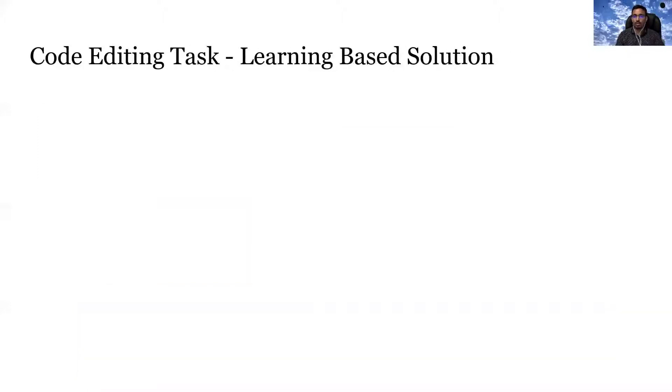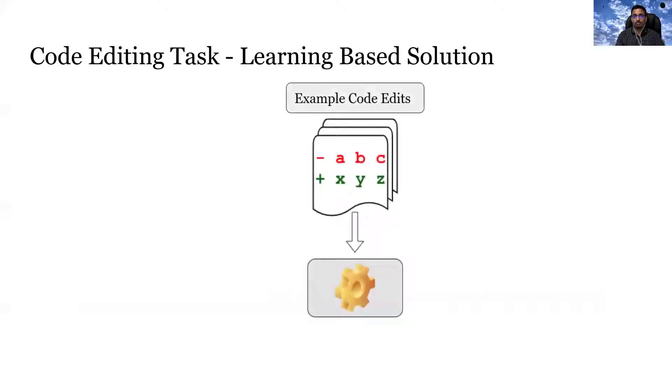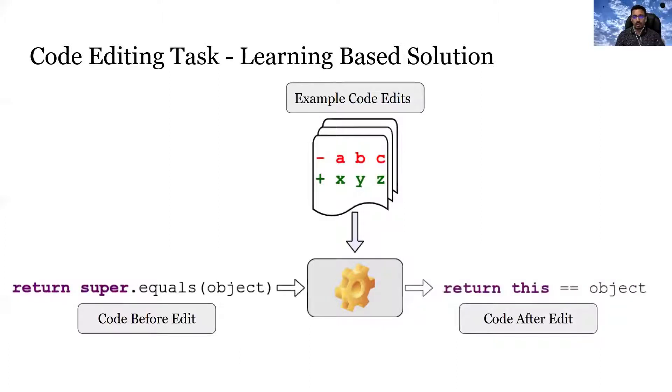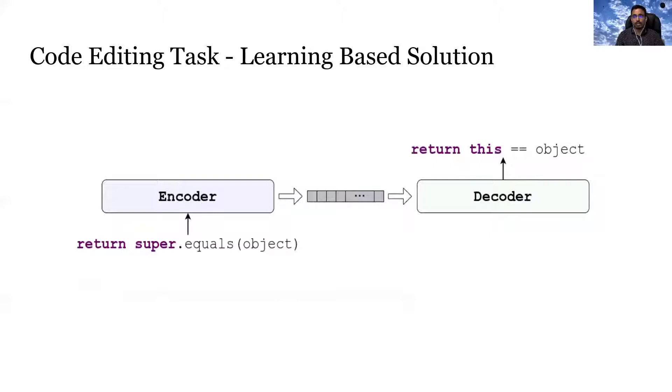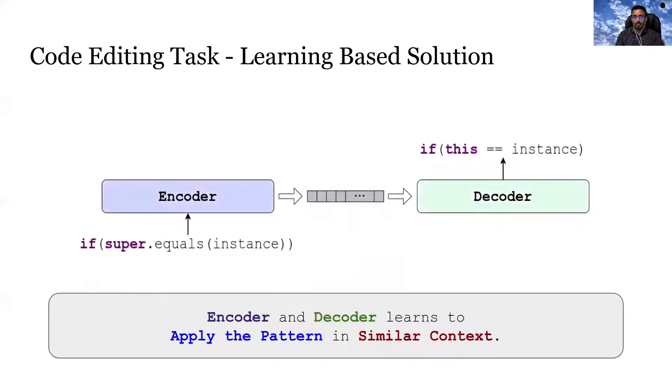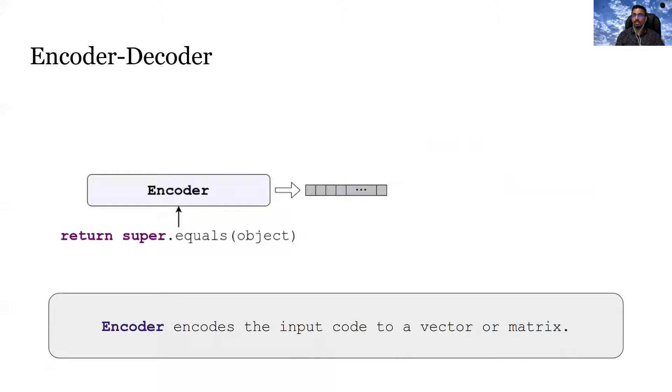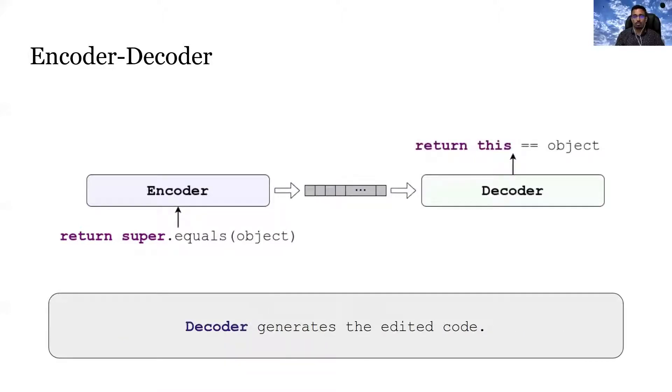Another way to solve this problem is to learn such edits. In this solution, we train a machine to learn code edit patterns from example edits. After training, the machine takes in the before-edit version of the code and translates it to the after-edited version. Thus, the machine applies the code change pattern in the process. In particular, we can use an encoder-decoder model with a code encoder and a code decoder. Together, they can learn the edit pattern from the example edits. Once the encoder and decoder learn the edit pattern, they can apply the pattern in similar contexts.